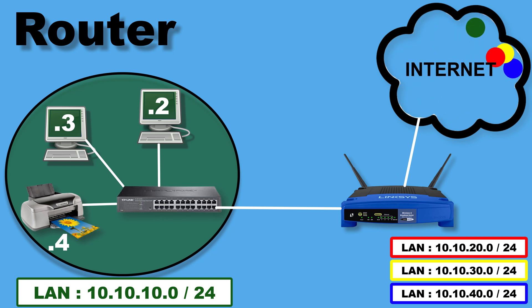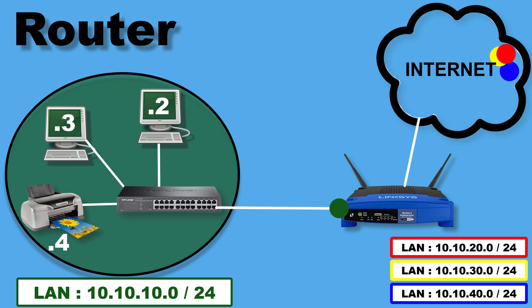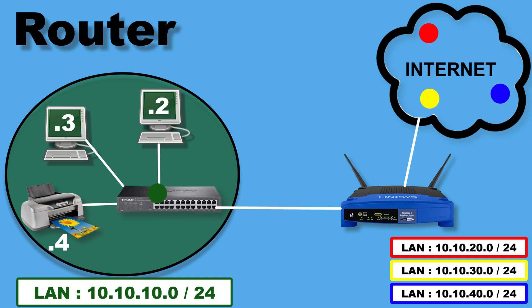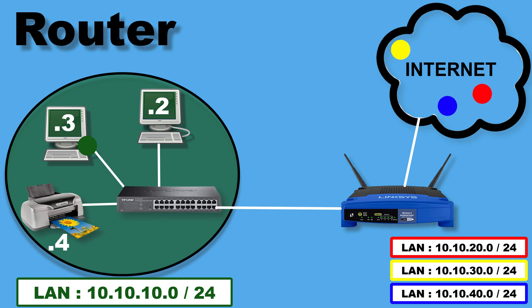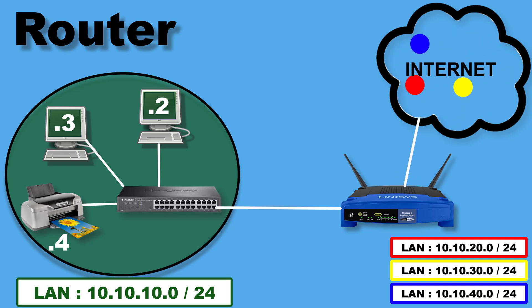On the other hand, if the router receives a data packet from another network or from the internet with the same IP scheme as its LAN network, it accepts it. All other data packets — yellow, blue, red, etc. — will be rejected by the router because their IP addresses do not match its network.